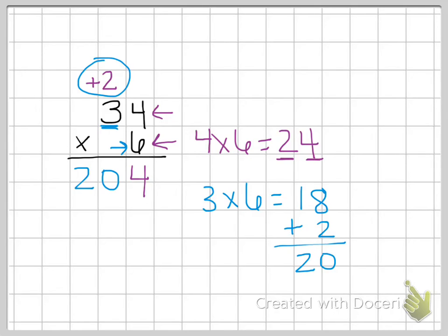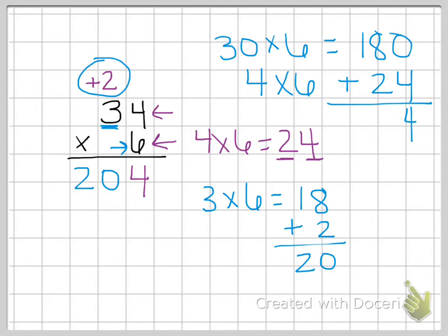Another way to think about that is to say, 34 is the same thing as 30 times 6 and 4 times 6. 3 times 6 is 18, add the zero to get 180. 4 times 6 is 24. Then we add those together to get 204.